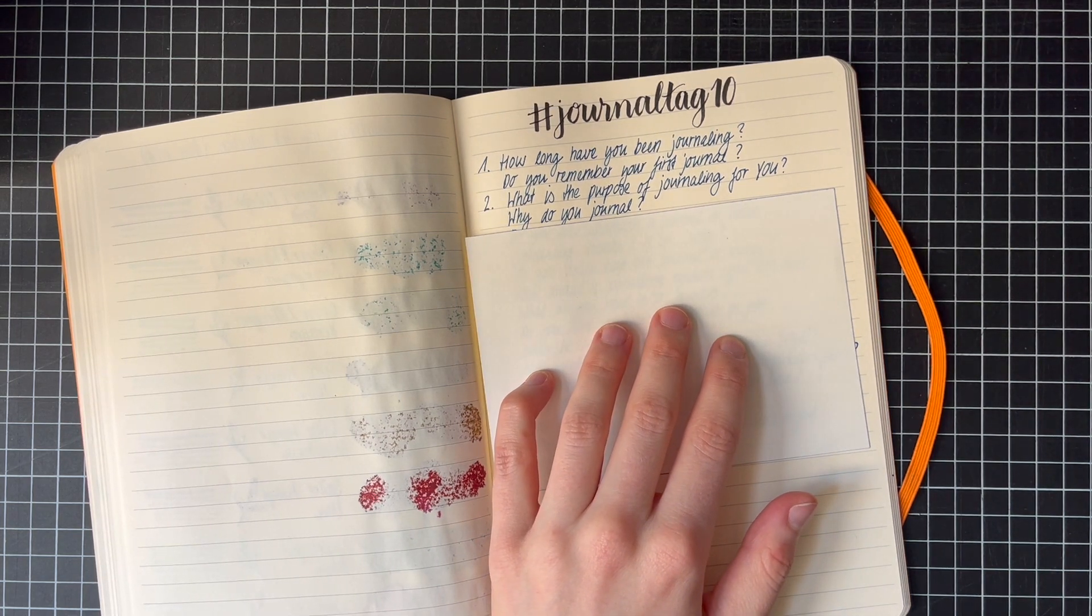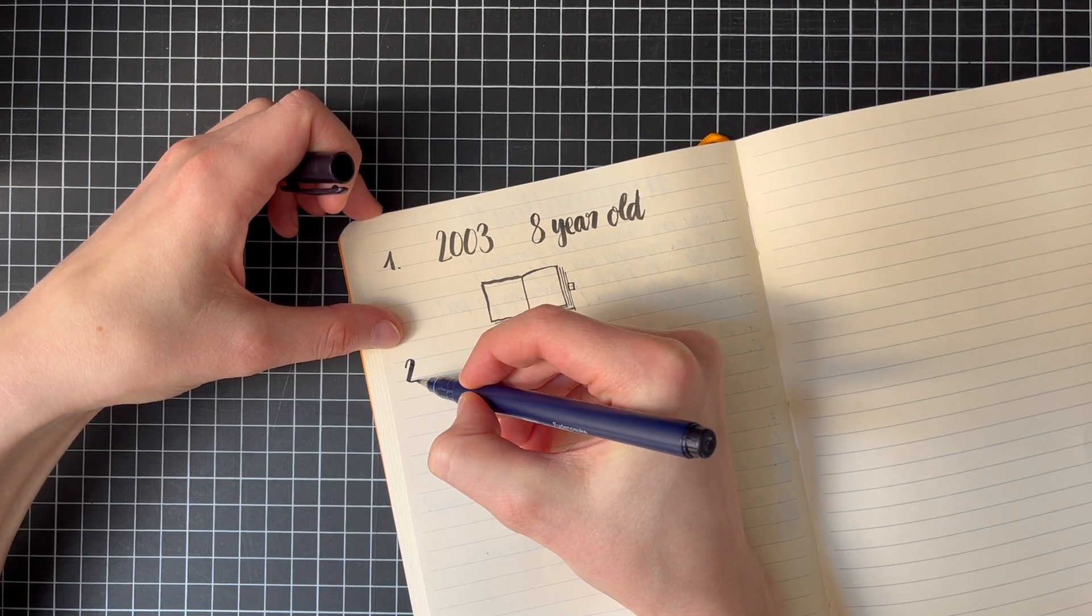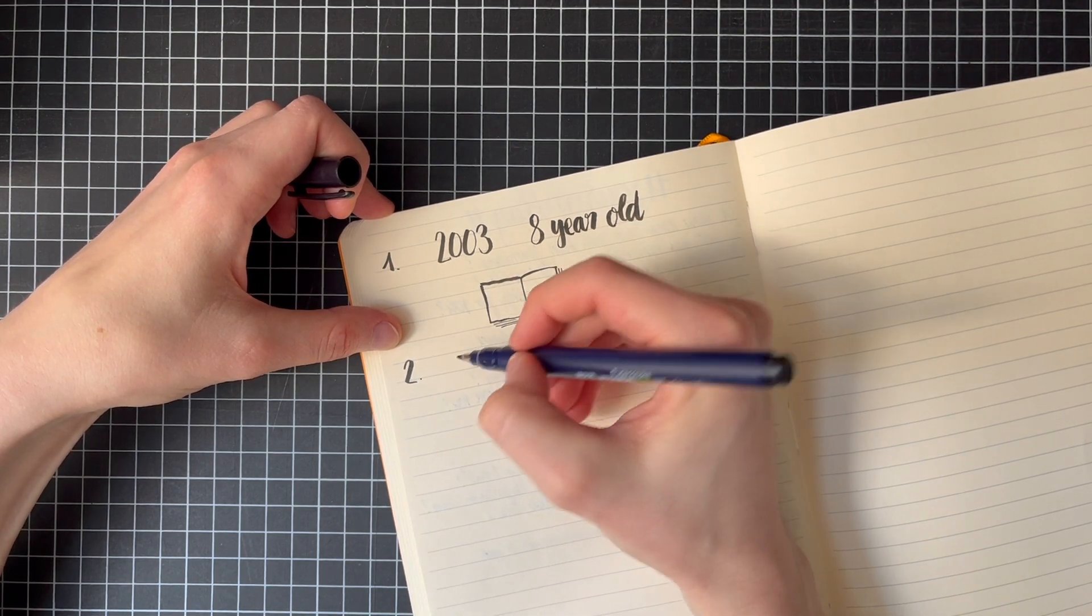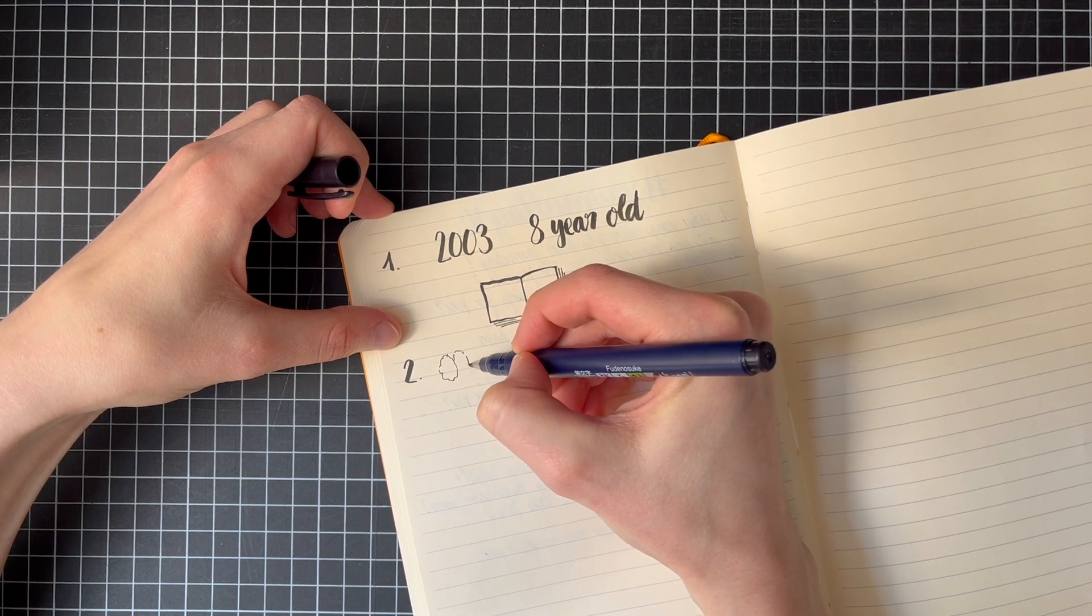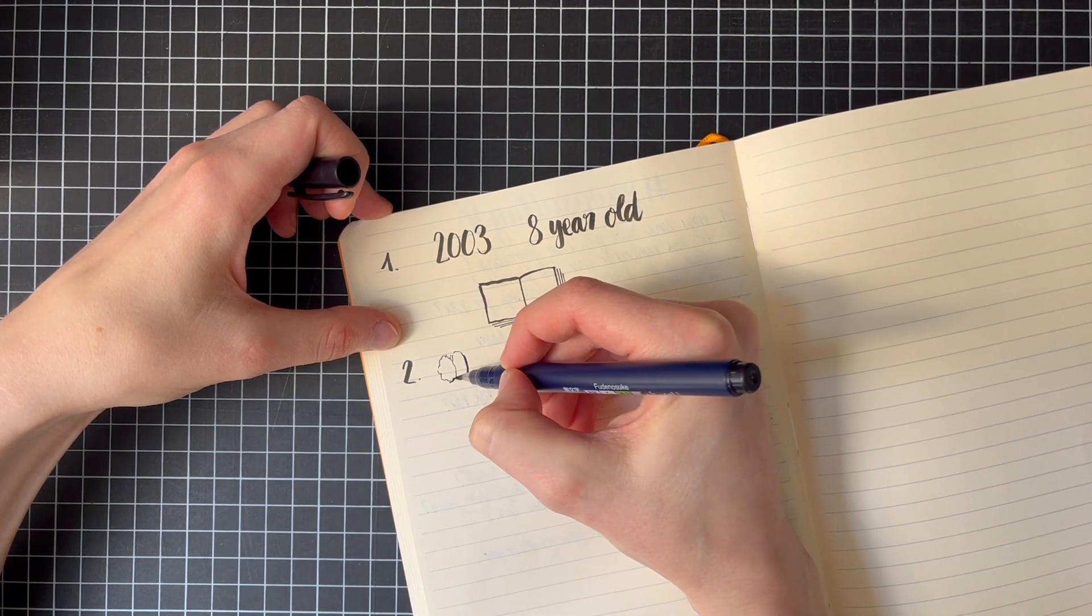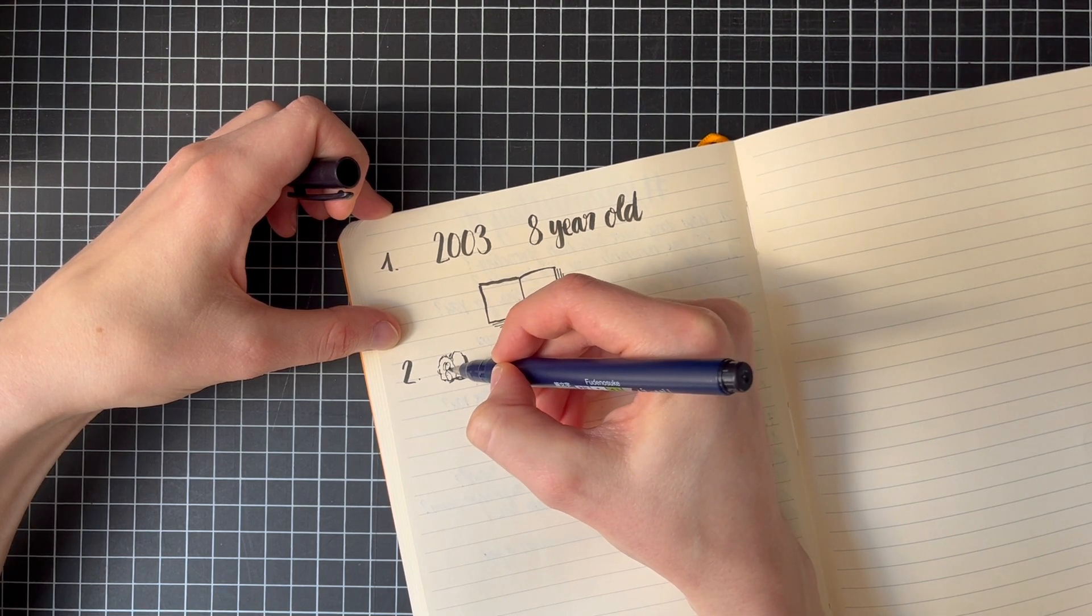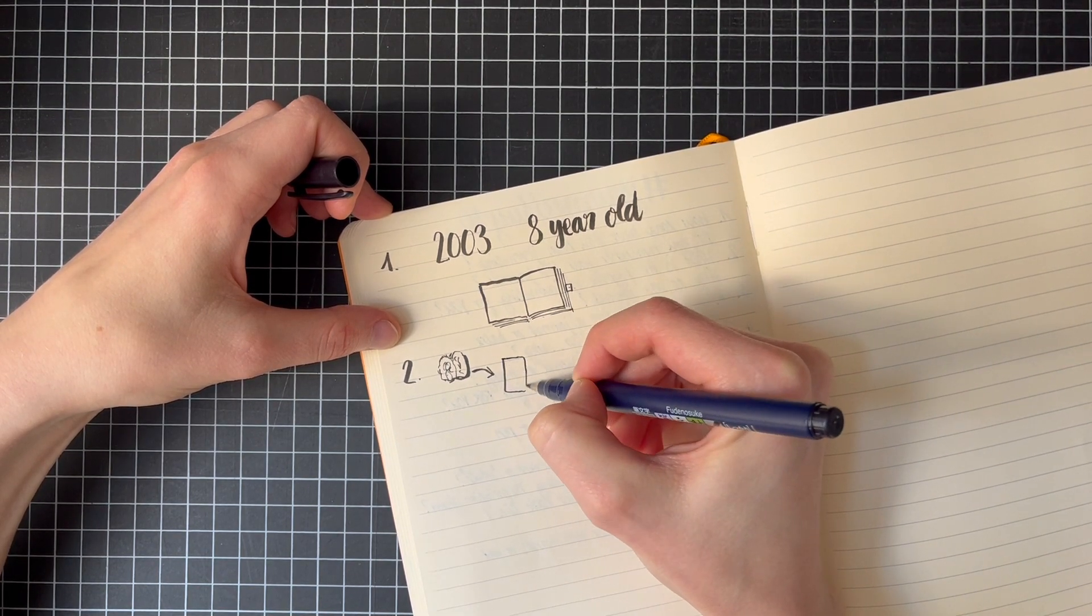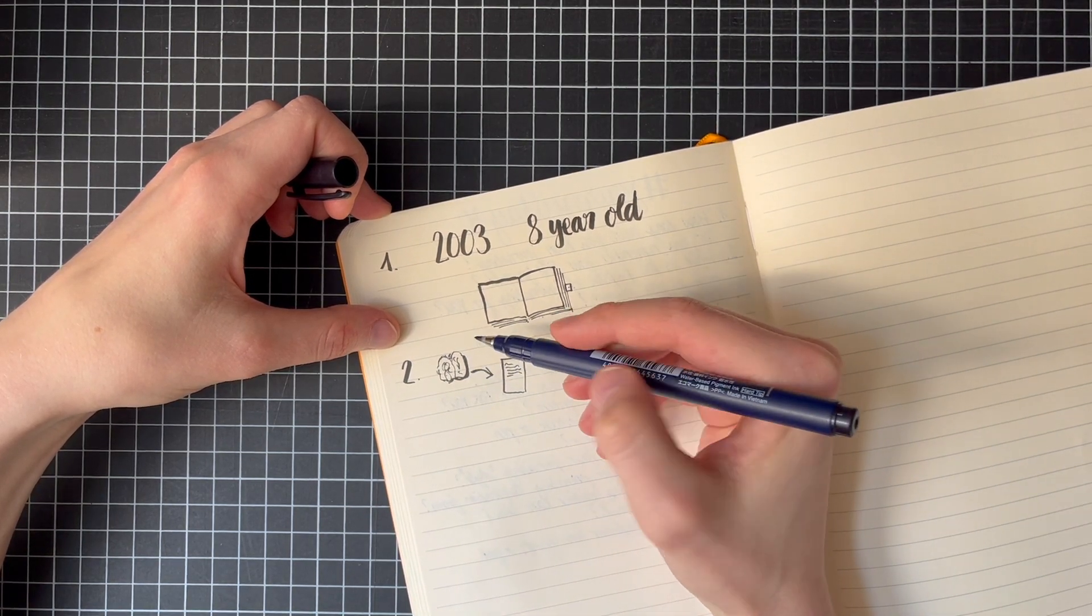What is the purpose of journaling for you? Why do you journal? The purpose of journaling is actually getting the thoughts that I have in my brain. This should be a brain. I cannot draw it much better. But this brain is full of junk. And this needs to go on the page, just written down so that I do not have to keep it in my brain.